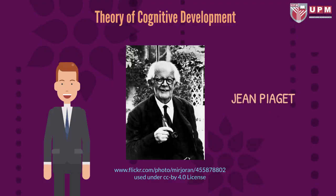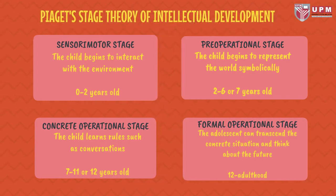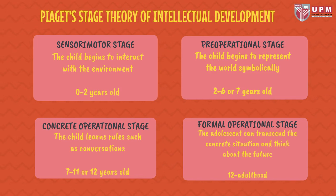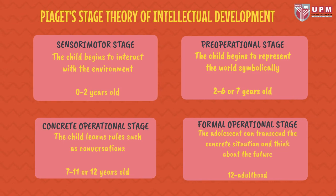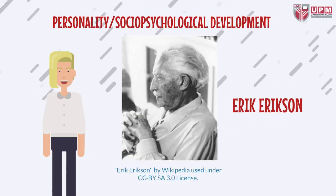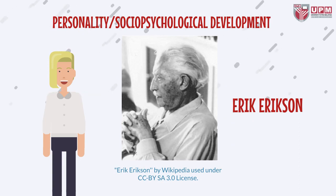Theory of cognitive development by Jean Piaget. Piaget's theory of intellectual development has four stages: First, sensorimotor stage — the child begins to interact with the environment (0–2 years). Second, pre-operational stage — the child begins to represent the world symbolically (2–6 or 7 years). Third, concrete operational stage — the child learns rules such as conservation (7–11 or 12 years). Fourth, formal operational stage — the adolescent can transcend the concrete situation and think about the future (12 years through adulthood).